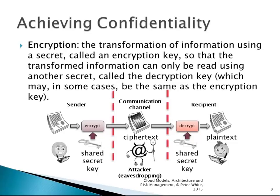On the left-hand side we have our sender who has a message. He has a shared secret key, so he encrypts it. Once encrypted, he can send it across his communication channel. Our attacker, sitting in the middle trying to capture the message, can capture it and attempt to read it, but if he hasn't got the key, he can't. The recipient also has a copy of the shared secret key, so he can decrypt and read the message. That's one method we use to achieve confidentiality.